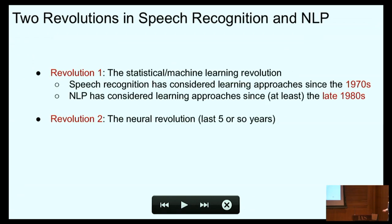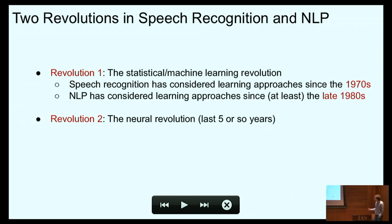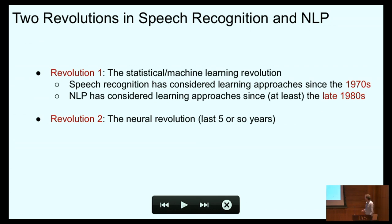As background, just to think about the field, in some sense there's a story of two revolutions. The first revolution was the move to statistical and machine learning approaches. This goes back to the 1970s for speech recognition and the late 1980s, roughly speaking, for NLP. And this was an absolutely seismic shift.